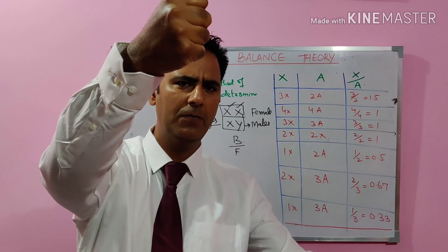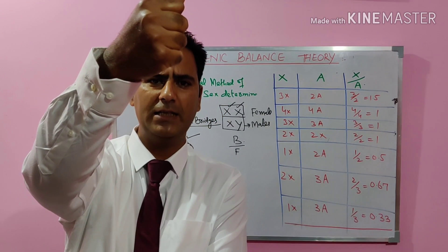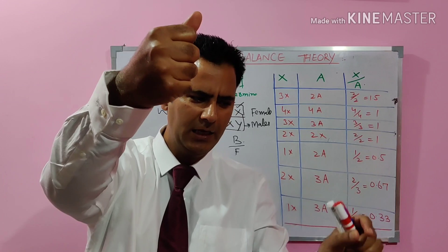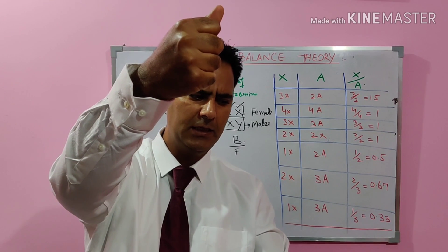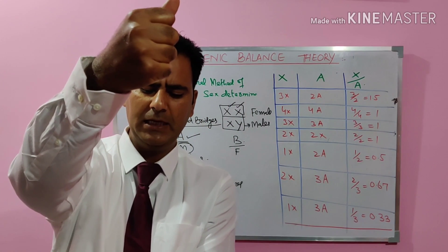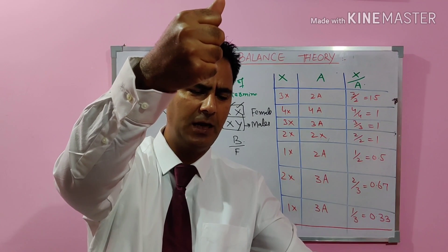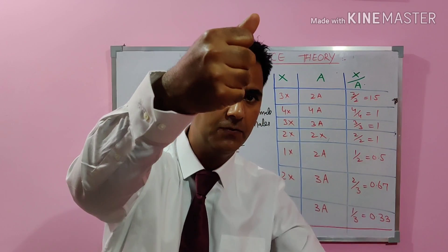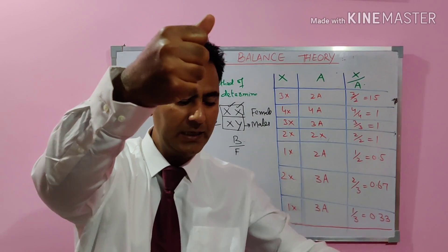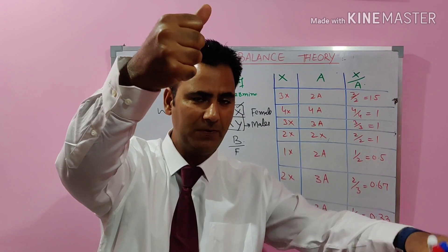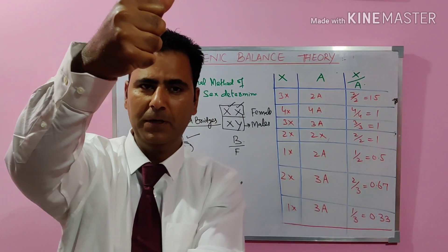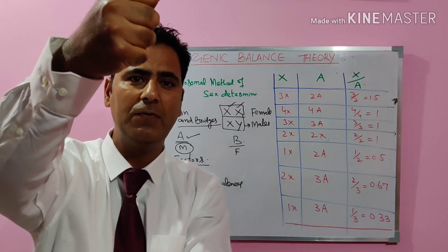Imagine a balance with 50 grams on the left side and 50 grams on the right side — the balance will be at the center. Correlating this with our topic: 50 grams on one side represents male-determining factors and 50 grams on the other side represents female-determining factors — so 50% of factors have inherent potentiality for femaleness and 50% for maleness.